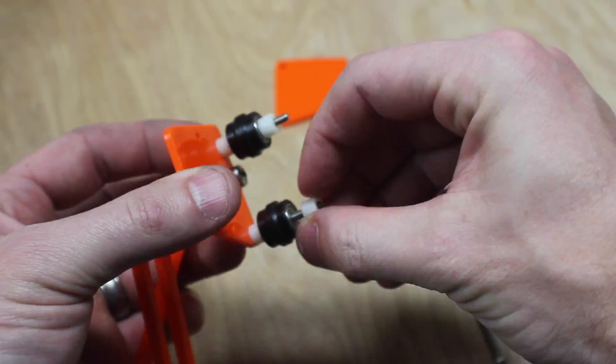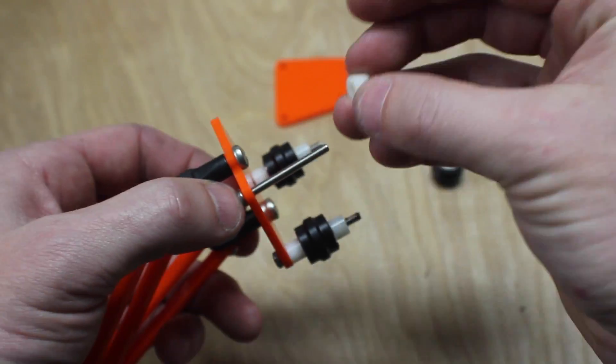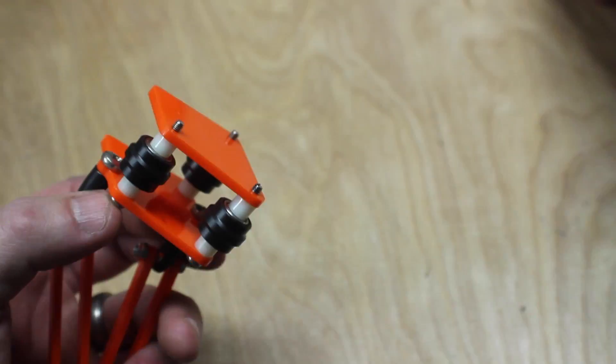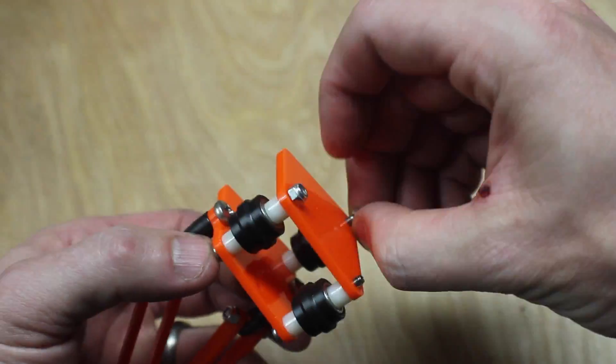Then you push some longer screws through these holes and add a spacer, a wheel, and a spacer to each one. Add the other plate on the other side and then attach it with some nuts.